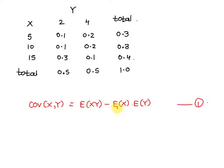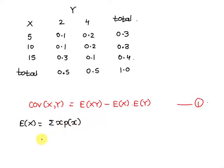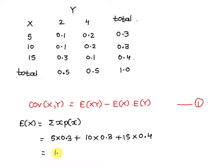First we need to compute the marginal expectation of the random variables X and Y. Expected value of X is given by the summation of x times probability of x. That is equal to 5 times 0.3, plus 10 times 0.3, plus 15 times 0.4. So the expected value of X is equal to 10.5.